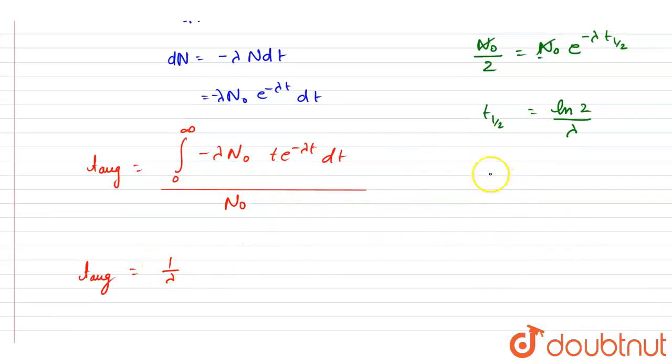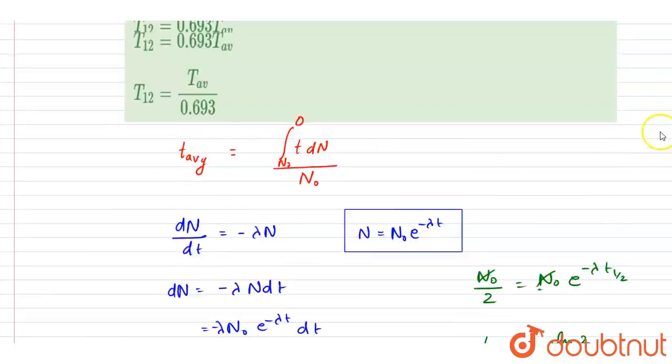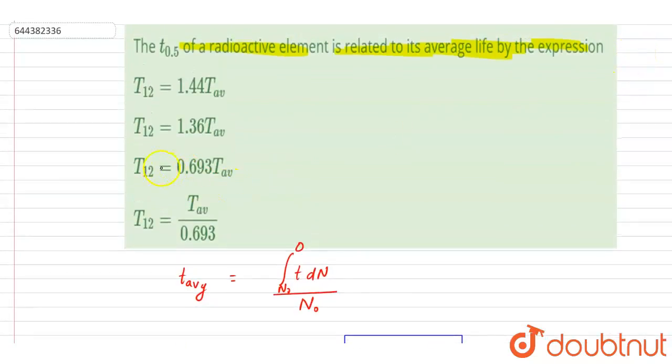We got these two equations. So t_half is ln(2)/λ and t_average is 1/λ. So here we can write down t_half equals ln(2) times t_average. This will be the relation. Now if you see the options, ln(2) times t_average is t_half, so ln(2) is 0.693. So option C will be the correct one. Thank you.